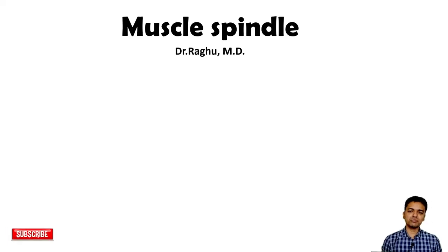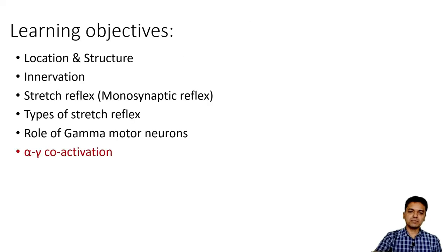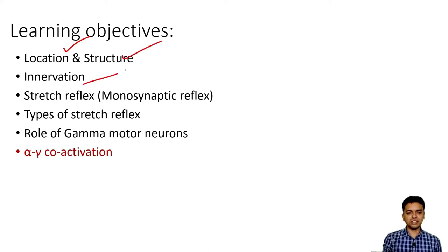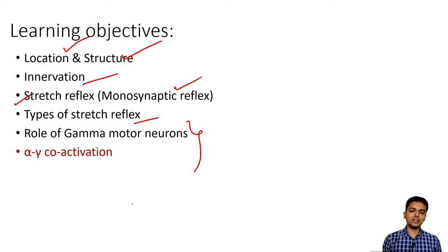For those people who have not subscribed to my channel, please hit the subscribe button. So let's study the muscle spindle in the following subheadings: where the muscle spindle is located, its structure, innervation — both afferent as well as efferent nerves — and the muscle spindle is involved in one very important reflex called the stretch reflex, also called as a monosynaptic reflex. We'll also study the different types of stretch reflexes and the very important role of the gamma motor neurons and what is called as the alpha-gamma coactivation.